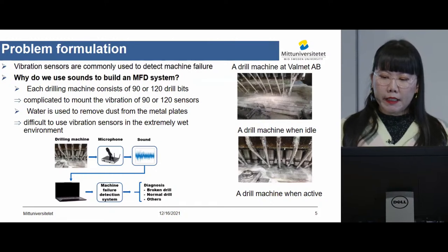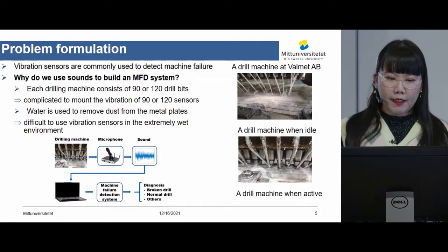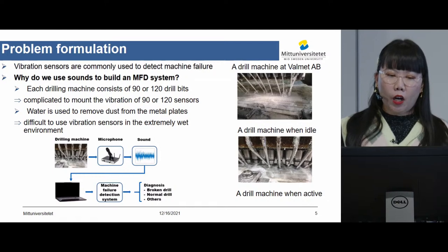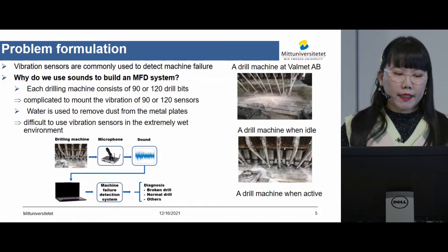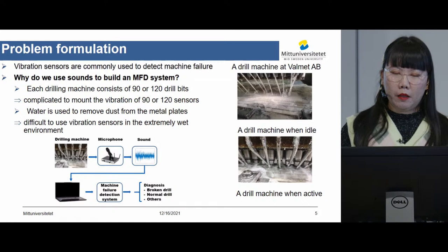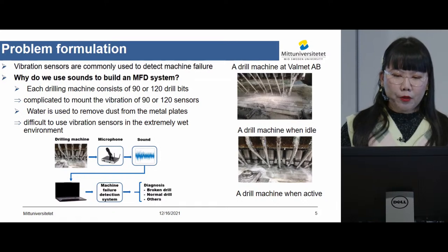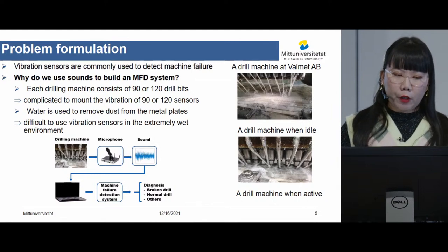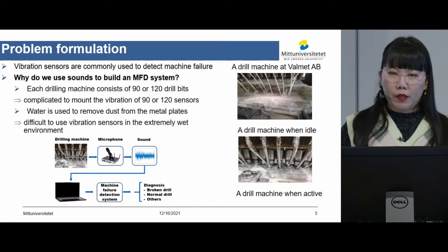Most machine failure detection systems use vibration sensors to detect failure, but why do we use sound in our research? Because the drilling machine at Valmet AB consists of 90 or 120 drill bits, and if we use sensors we would need one sensor per drill bit, making it very complicated to mount 90 or 120 vibration sensors. Secondly, water is used to remove dust from the metal plates, as you can see in this image. It is really difficult to use vibration sensors in an extremely wet environment. This motivates us to use sound in our research.